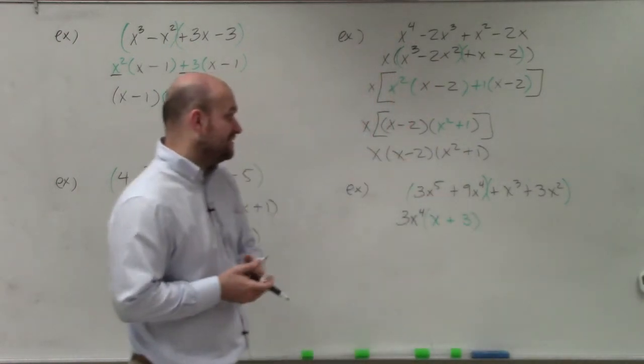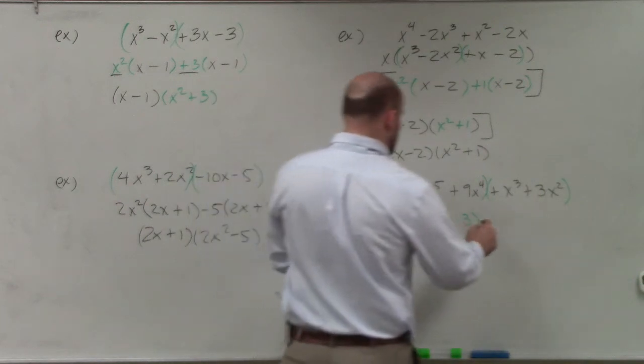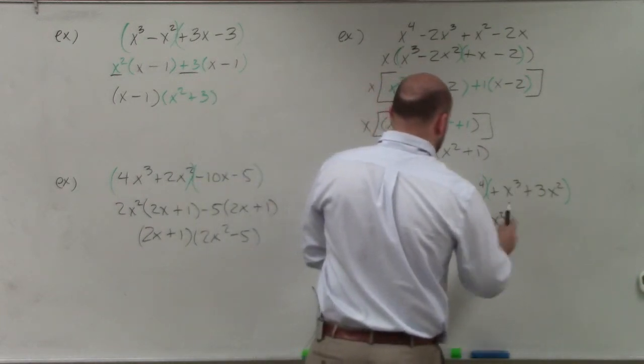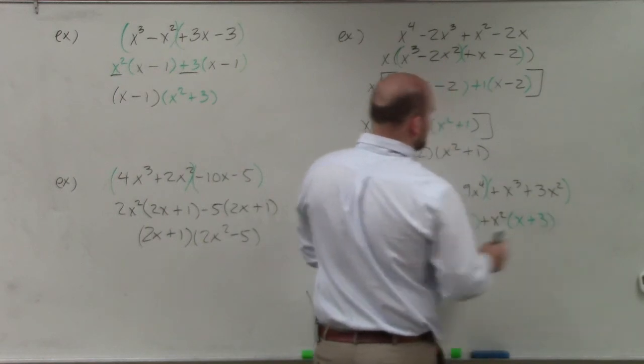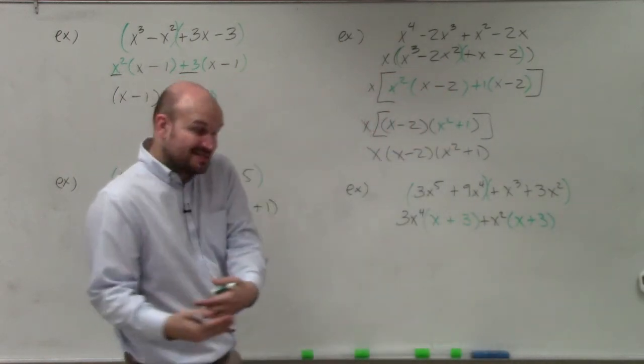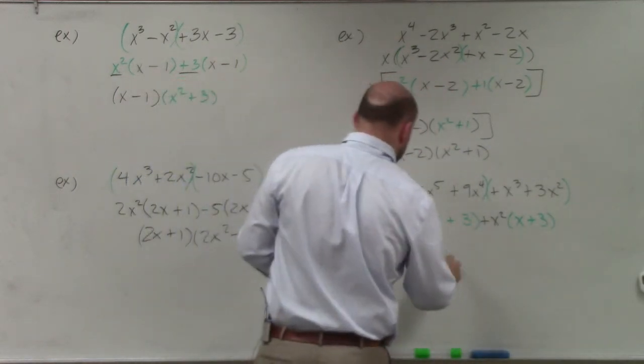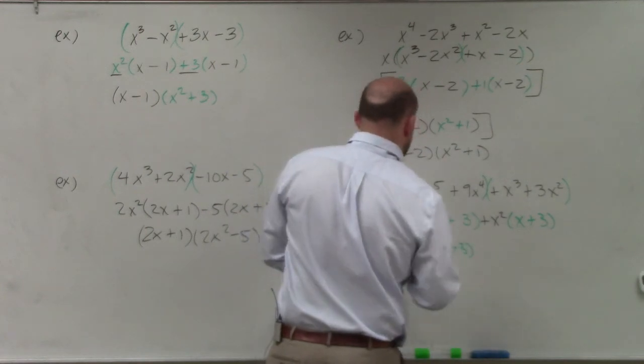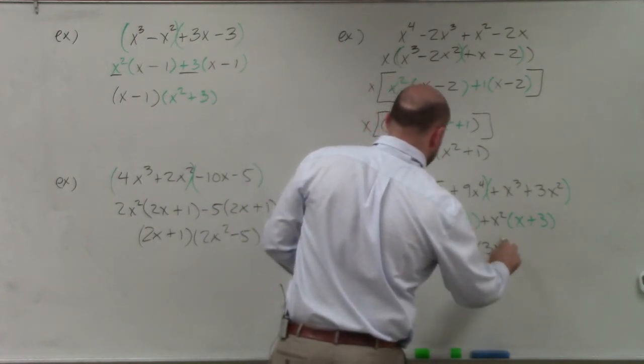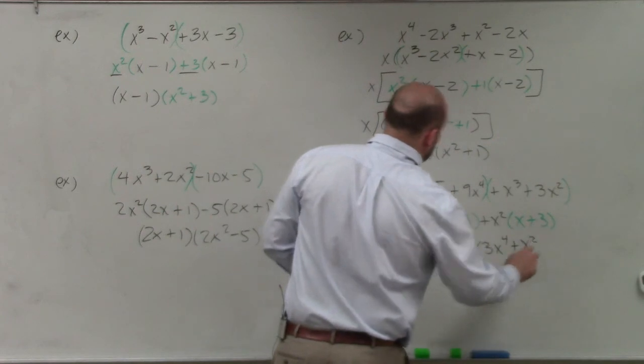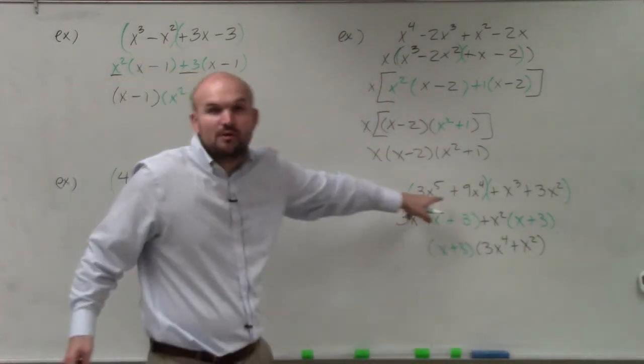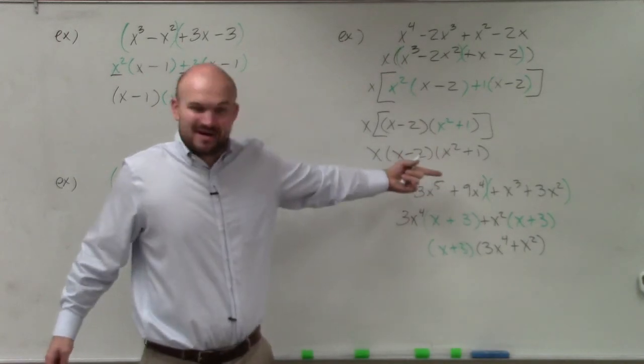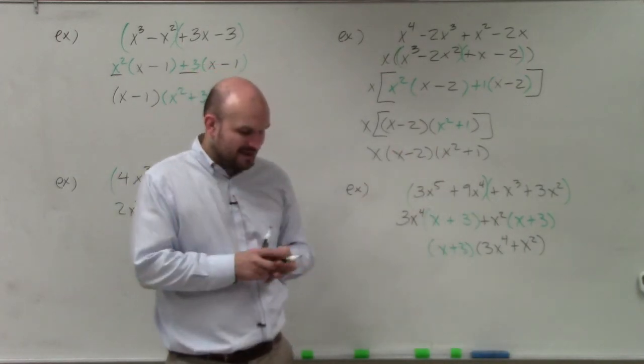And by doing that, I'm going to be left with x plus 3. And then over here, I can factor out an x² by factoring out a positive x². Again, I'm going to be left with an x plus 3. Now you can see the green x plus 3 is common, so I can factor that out. And I'm left with a 3x⁴ plus x². Which again, you could factor out an x² from there, which is what we would have originally factored out anyways. So you can see how it wouldn't really have changed your answer.